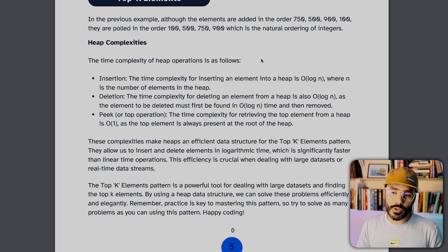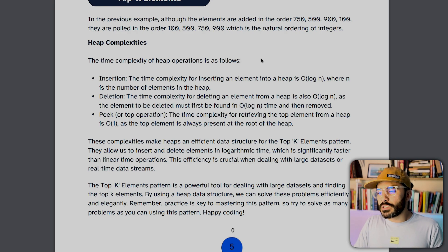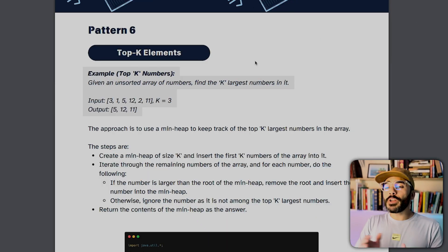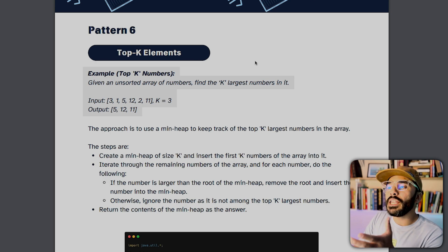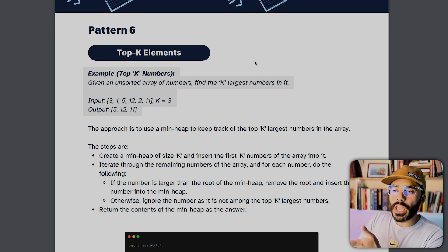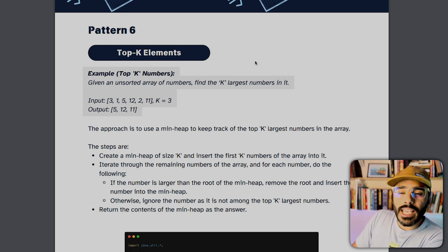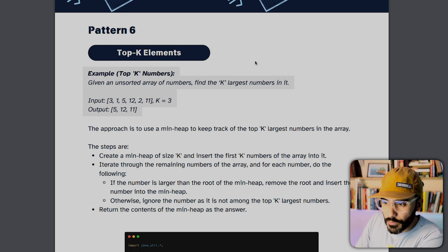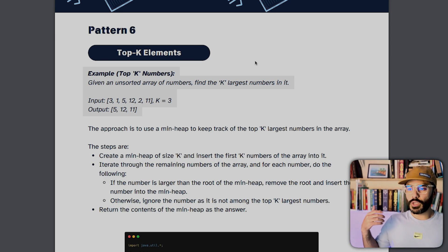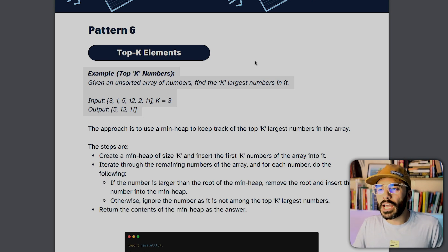You can do several operations with the heap: insertion, deletion, and peeking to see what item is next. This is very useful for problems like top K numbers — given an unsorted array of numbers, find the K largest. For example, with the array 3, 1, 5, 12, 2, 11 and K=3, the three largest numbers are 5, 12, and 11, while the others are 3, 1, and 2. Using the top K elements pattern, you can easily solve this even without a sorted array.